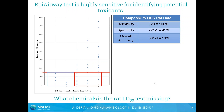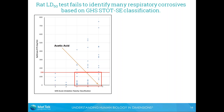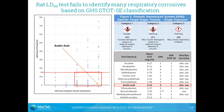We wanted to understand what these chemicals were and why the rat test may be missing them. As a first example, acetic acid has a very low IC75 value in the EpiAirway test, but based on rat data it is only a GHS category 5. However, looking at the secondary STOT classification scheme, acetic acid is STOT category 1 and is known to be both a skin and eye corrosive. Looking at additional chemicals in this group, many are also skin and eye corrosives classified as STOT category 1 — indicating the rat LC50 test may be missing many respiratory corrosives.